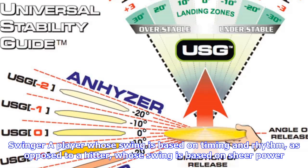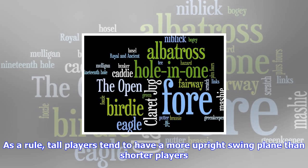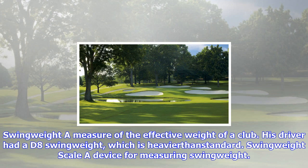Release: the act of freely returning the club head squarely to the ball at impact, producing a powerful shot. Tiger Woods has a textbook release of the club at impact. Reverse weight shift: a swing flaw in which the weight moves forward on the backswing instead of to the back leg. His reverse weight shift caused him to be a poor driver of the ball.